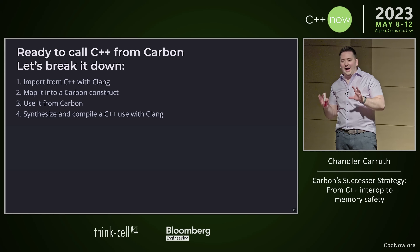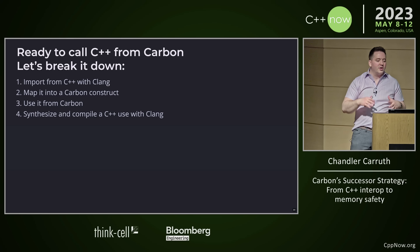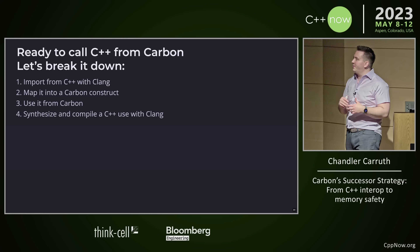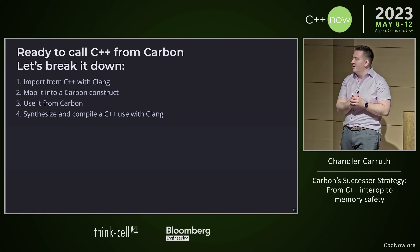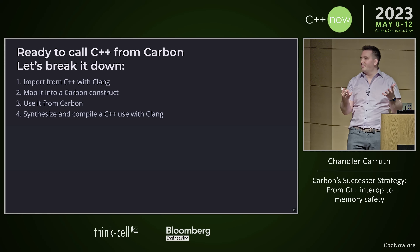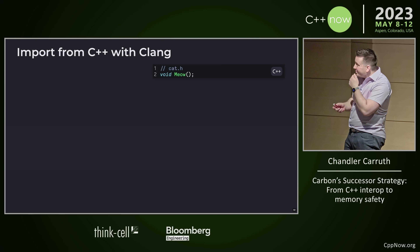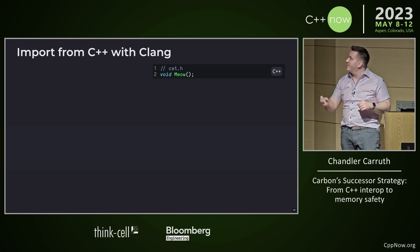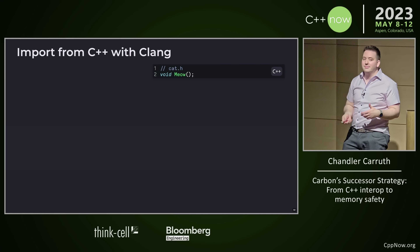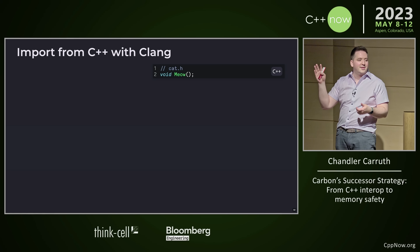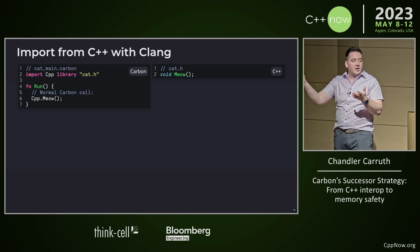Now we need to use these building blocks to actually build interesting interop. Remember, calling functions was the easy case. We're going to have basically four core steps: we're going to import C++ with Clang, map it into some Carbon constructs, use it from Carbon, and then synthesize its behavior. We're going to actually walk through these with something really concrete using code. We start off with C++ code — we've got a lovely cat header file that allows us to meow.